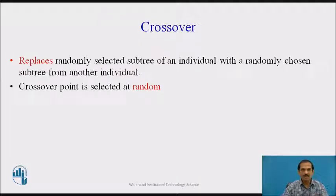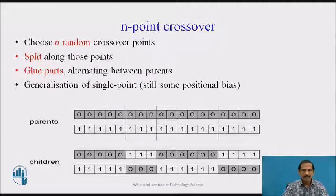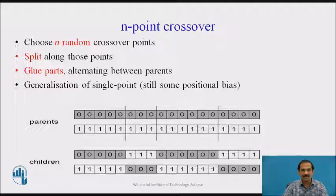The crossover function replaces a randomly selected subtree of one individual with a randomly chosen subtree of another individual, and the crossover point is also selected at random. In n-point crossover, we exchange the tails of the chromosomes at the endpoints, choose n random crossover points, split along these points, and glue parts alternating between the parents — a generalization of single-point crossover. Some positional bias is established wherever required.